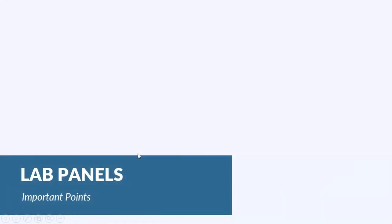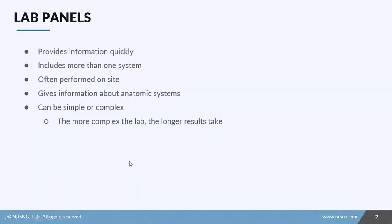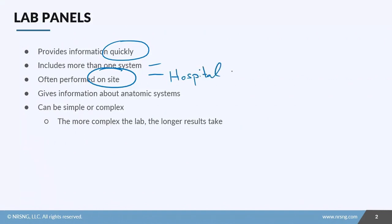In this lesson we're going to take a look at the different types of lab panels you may run across when taking care of your patients. The beauty of these tests is that they can provide information quickly, they usually include more than one system so you can look at electrolytes and liver function at the same time without submitting two different tests. They're often performed on-site in a hospital lab, and they give information about specific anatomical systems such as kidney or liver function.